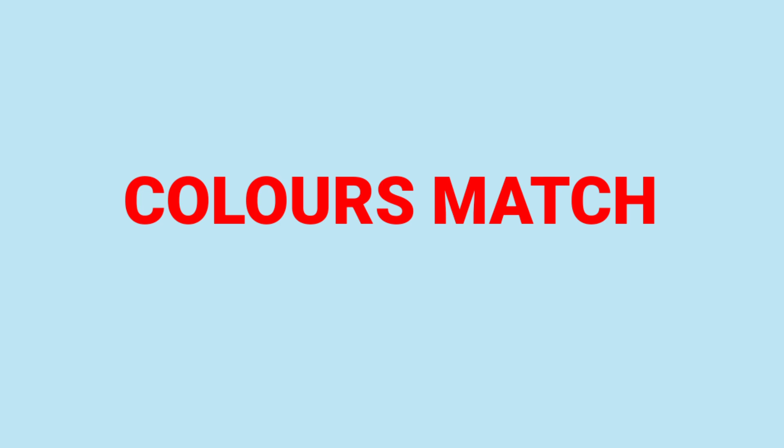Colors match. Here, we see different colors. So, let's see. Here, see the picture. Tomato, sunflower, and kite. And we also see some colors. Now, match the colors with things.